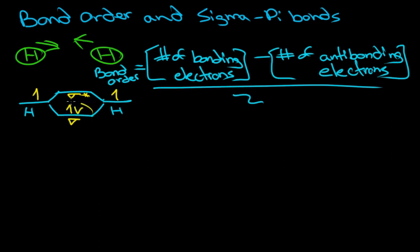That means we have one bonding orbital. So we take the number of bonding electrons—one bonding orbital has two electrons. So that's two minus zero anti-bonding, divide the whole thing by two, and that equals two over two, which equals one.